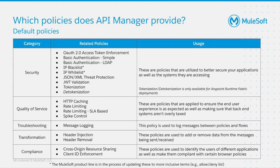So what are the policies that API Manager provides out of the box? Here we see the five different categories with their available policies. The first category is all about adding more security on top of your applications as well as the systems your applications are accessing. In this category, we have policies like OAuth 2.0 Access Token Enforcement, basic authentication with username and password, but also LDAP-based. If you want to allow or deny incoming requests for specific IPs or IP ranges, you can use the IP Deny List and IP Allow List policies. JSON and XML Threat Protection helps to protect your APIs from unusual inflation of JSON or XML elements, which could lead to heavy consumption of memory resources in case of an attack.